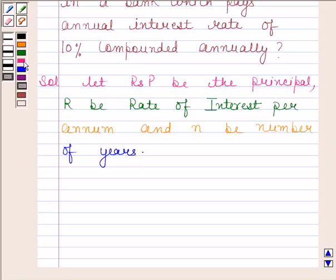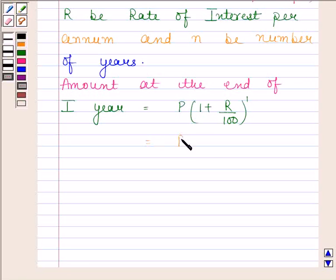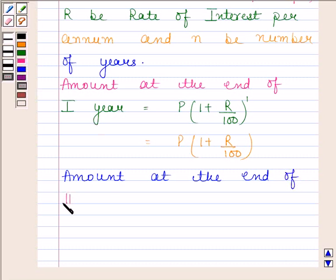Amount at the end of first year: the principal will be P into 1 plus R by 100 to the power of 1, that is, P into 1 plus R by 100. Now amount at the end of second year will be P into 1 plus R by 100 to the power of 2.